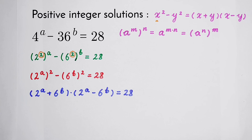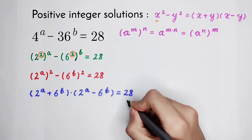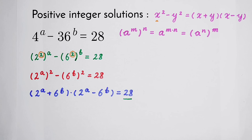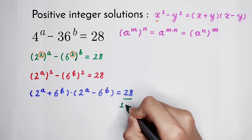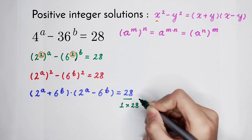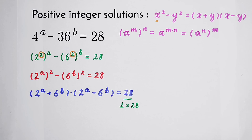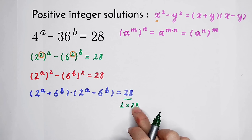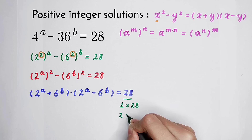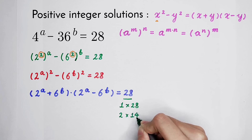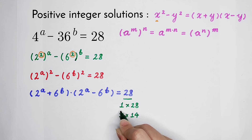Now we can solve the values for these two factors, but not directly. First we have to analyze the number 28. It has to be written as a product of two numbers — two positive integers. It can be written as 1 times 28, 2 times 14, and 4 times 7.